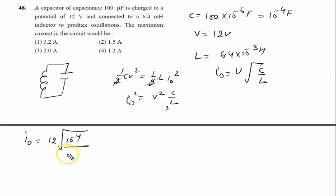So we can write I0 equal to V, V is 12 volt, root C, C is 10 raised to power minus 4, upon L is given by 6.4 into 10 raised to power minus 3. Equal to 12 root 10 raised to power minus 4 into 10 raised to power 3 into 10 upon 64 like this.